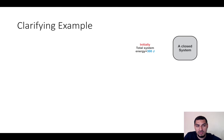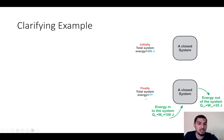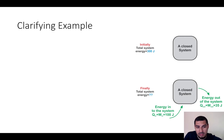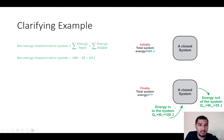To clarify with an example: suppose we have a closed system with a total energy of 300 joules. The system gained energy in the forms of Q and work equal to 100 joules, and lost energy equal to 35 joules. The net energy transferred to the system is the summation of energy in minus summation of energy out: 100 minus 35 equals 65 joules.